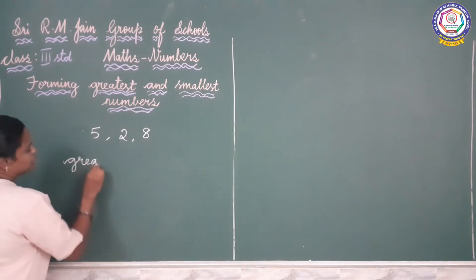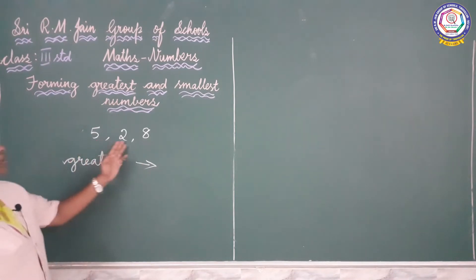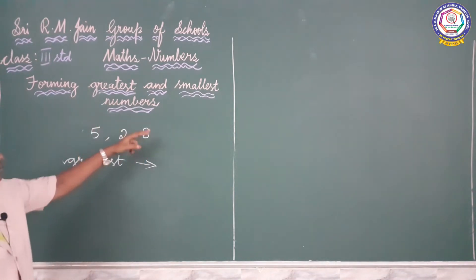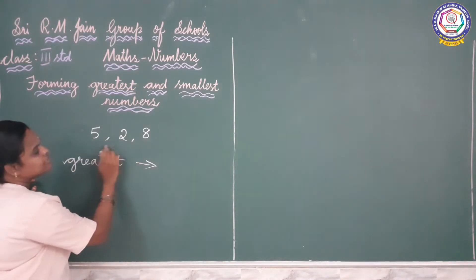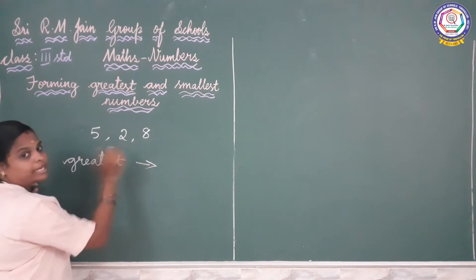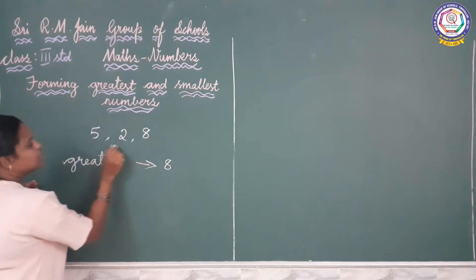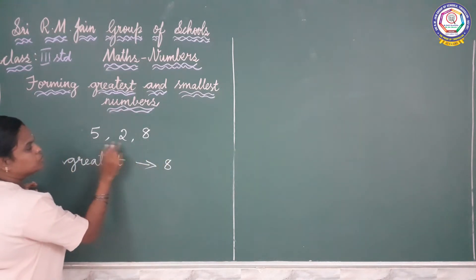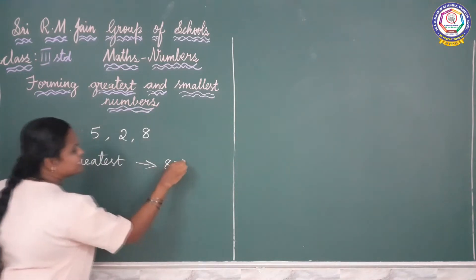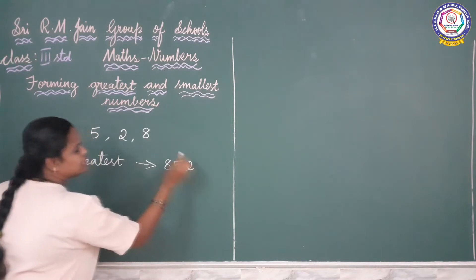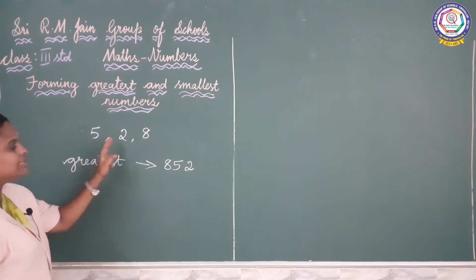I am going to find out the greatest number using these 3 digits. We are going to find out the greatest 3-digit number from these 3 digits. So which is the greatest number here — 5, 2, 8? 8 is the greatest number. Then you compare 5 and then 2. Which is the next greatest number? 5. What is the next number? 2. So 852 is the greatest number we have formed using these numbers.